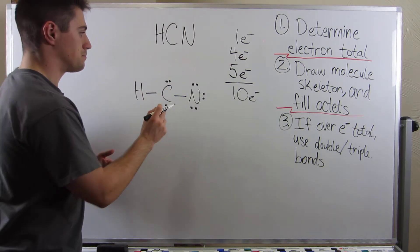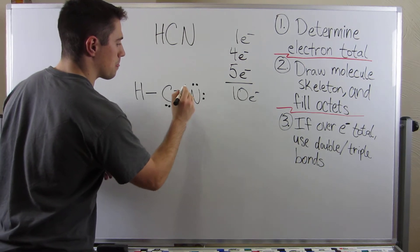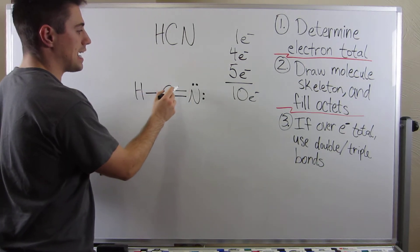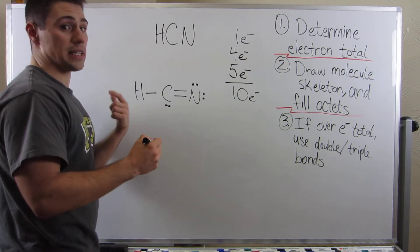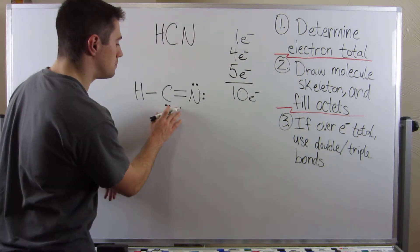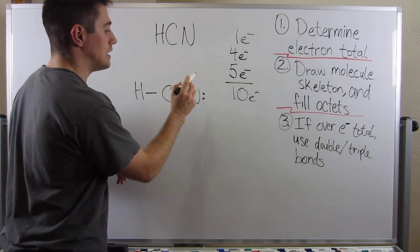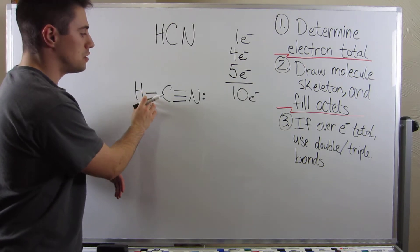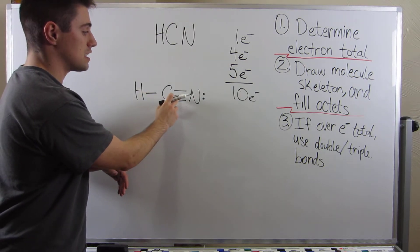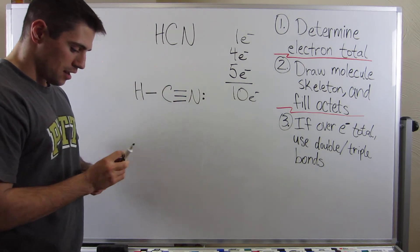I'm going to erase these guys. Two, four, six, eight, ten, twelve. Still two too many, so let's do it again and let's make a triple bond. Two, four, six, eight, ten, and everyone has a full octet. Hydrogen has two, carbon has two, four, six, eight, and nitrogen has two, four, six, eight.